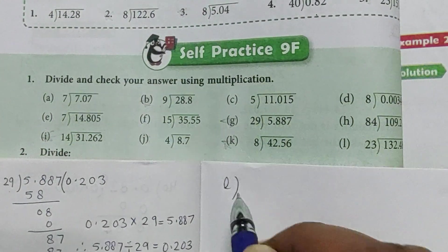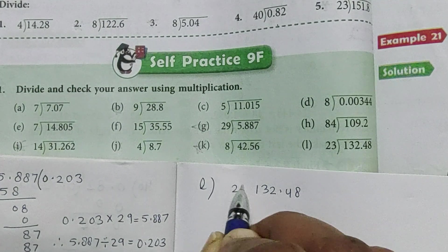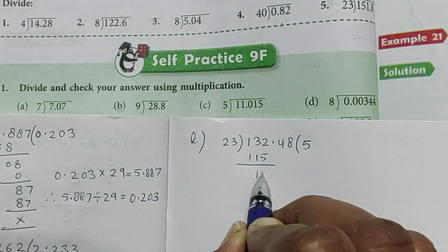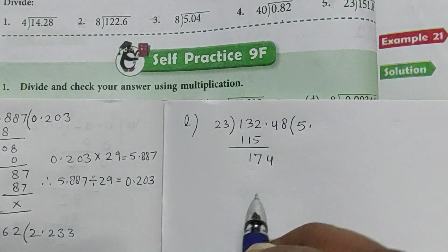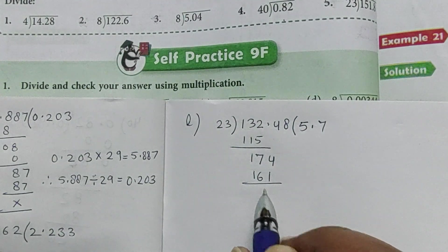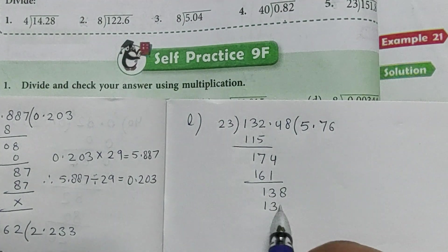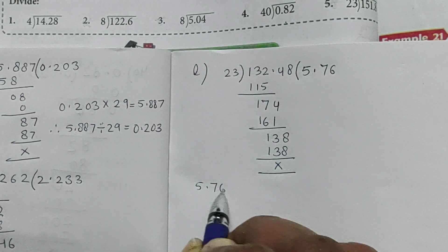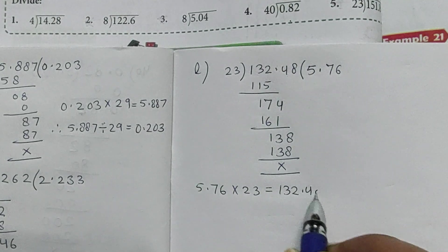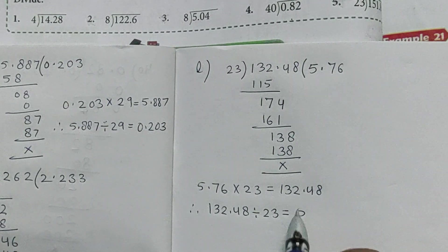Now last part L: 132.48 divided by 23. 23 into 5 is 115. 132 minus 115 is 17. Bring down 4. Put the decimal point. 23 into 7 is 161. 174 minus 161 is 13. Bring down 8, which gives 138. 23 into 6 is 138. Now 5.76 multiplied by 23 is equal to 132.48. Therefore, 132.48 divided by 23 is equal to 5.76.